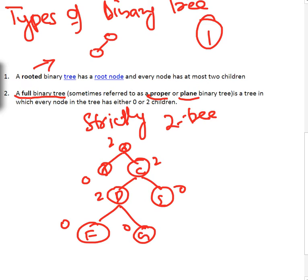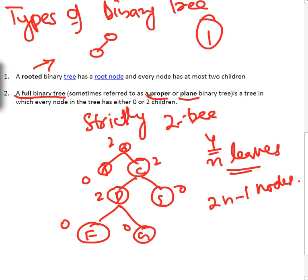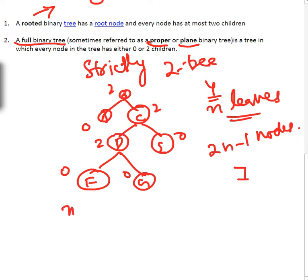One important property of a strictly binary tree: if we have n leaves, the tree will have 2n minus 1 total nodes. In our example we have four leaves (n = 4), so 2×4 − 1 = 7 total nodes — and counting gives us exactly seven. So the property of a full binary tree is: total nodes = 2n − 1, where n is the number of leaves.